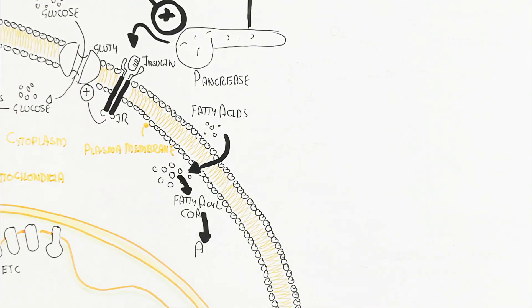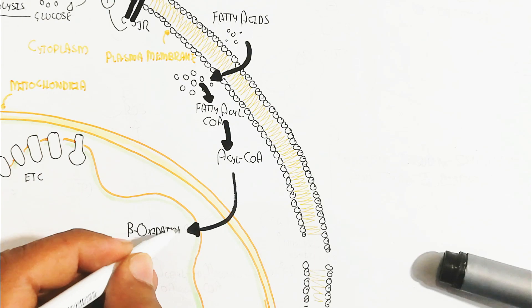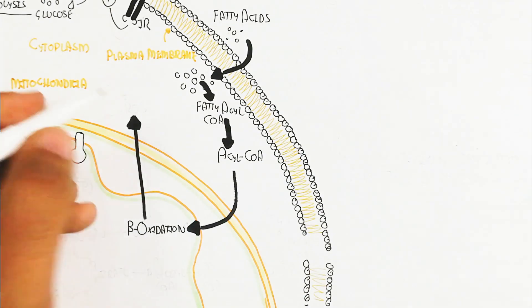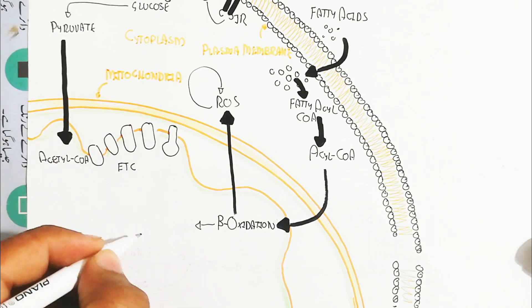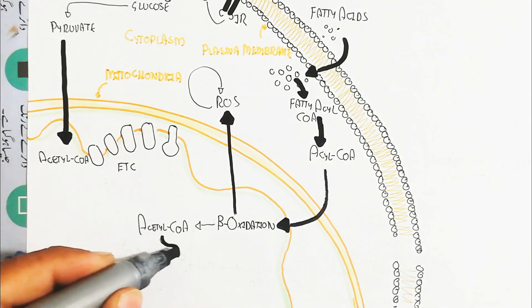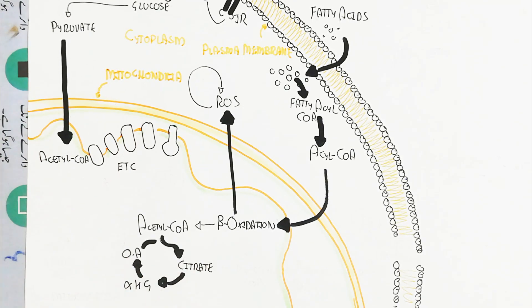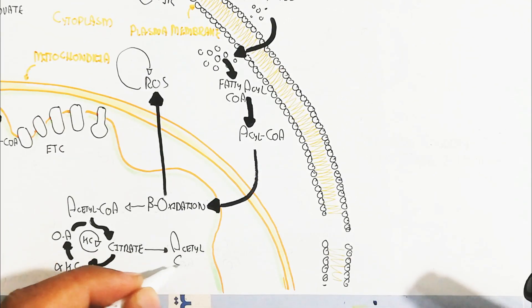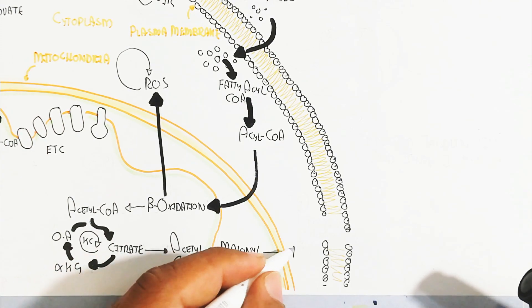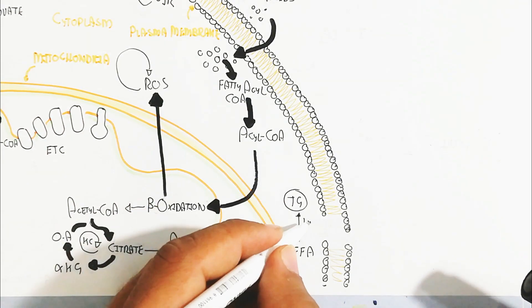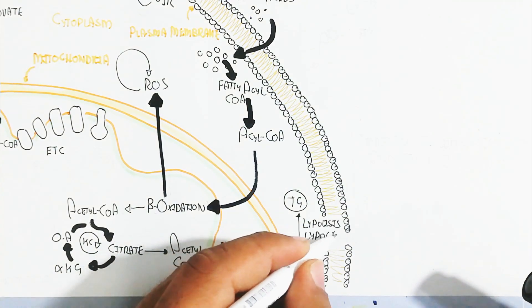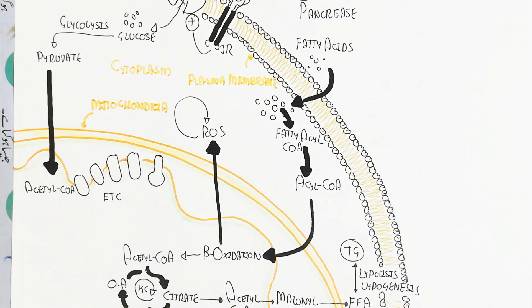The fatty acetyl-CoA is formed in the cytoplasm, and acetyl-CoA is formed inside the mitochondria where beta-oxidation occurs, producing more reactive oxygen species. The acetyl-CoA from beta-oxidation enters the Krebs cycle to produce citrate, alpha-ketoglutarate, and oxaloacetate. Citrate is converted back into acetyl-CoA, then into malonyl-CoA, which is converted into free fatty acids and stored as triacylglycerol — this is lipogenesis, allowing fat accumulation.